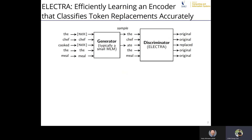After the first language model, ELECTRA takes the output and puts it into a discriminator, which is the ELECTRA layer. The model inside the discriminator is similar to the generator, and the point of the discriminator is to identify whether each word is original or a replacement. Note that if the predicted word matches the original word, the label should be 'original' rather than 'replacement,' even though it was a predicted word.